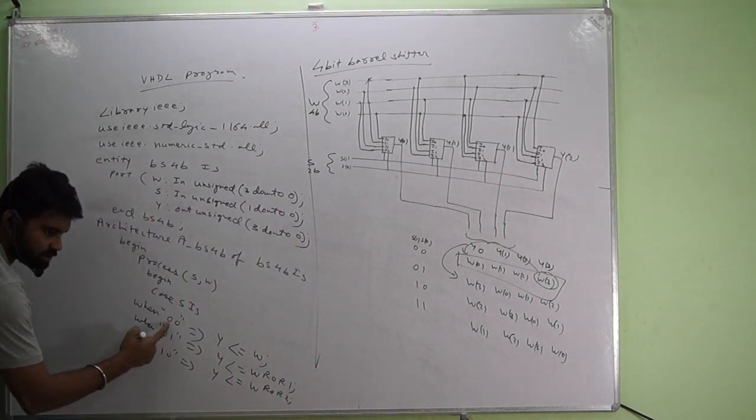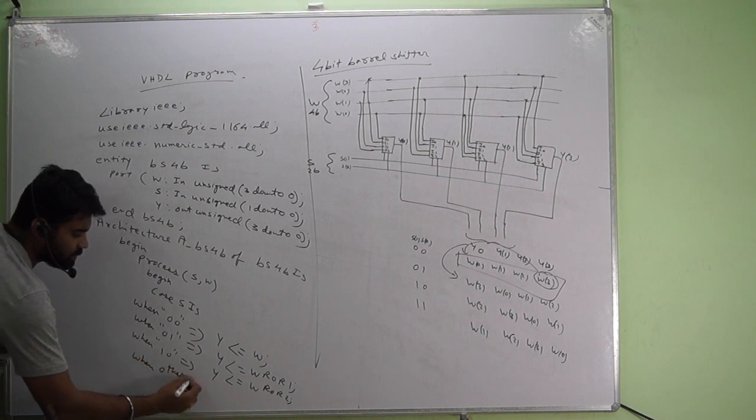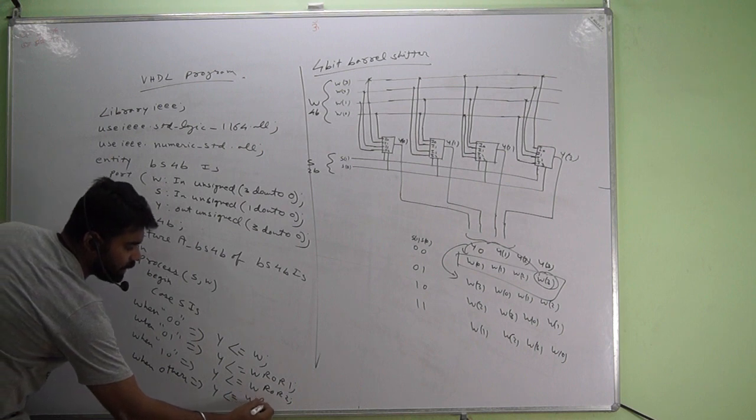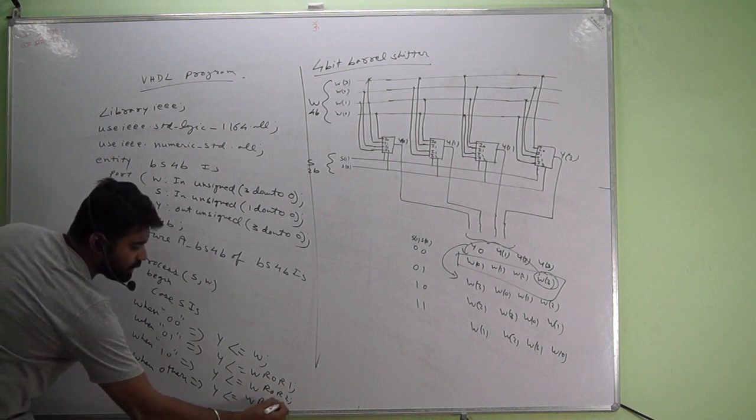So 0 0 is there, 0 1 is there, 1 0 is there, so when others, y w r r r three times.